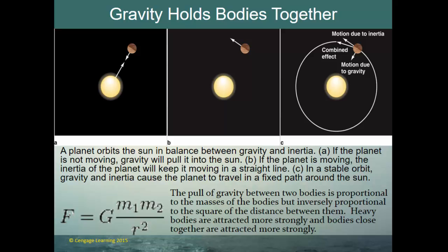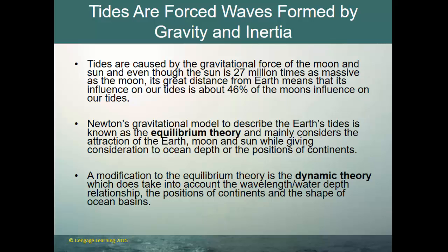The pull of gravity between two bodies is proportional to their masses (M1 and M2), but inversely proportional to the square of the distance between them. So heavier objects generate more gravity, and the further the distance between two objects, the less gravity there will be. Tides are forced waves formed by gravity and inertia, caused by the gravitational force of the moon and the sun. Even though the sun is 27 million times as massive as the moon, its great distance from earth means its influence on our tides is only about 46% of the moon's influence.